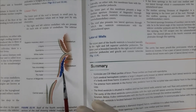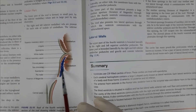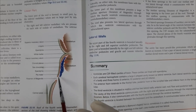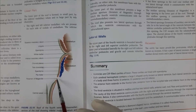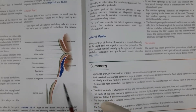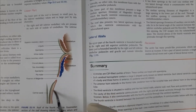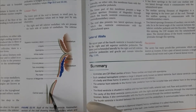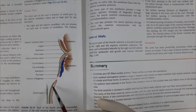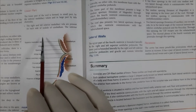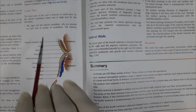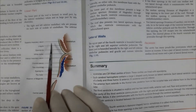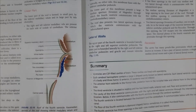The choroid plexus secretes CSF through the tela choroidea into the cavity. The lower margin has the foramen of Magendie in the midline - a median aperture - through which CSF passes into the subarachnoid space, specifically the cerebellomedullary cistern. Below is the closed part of the medulla with the beginning of the central canal, while the open part of the medulla above forms the floor. This is the vital cavity called the fourth ventricle.